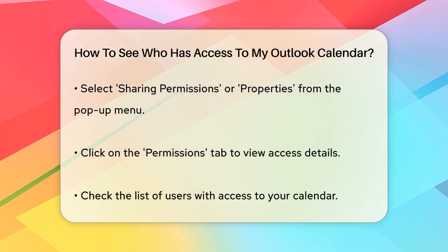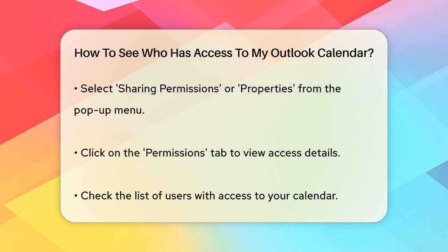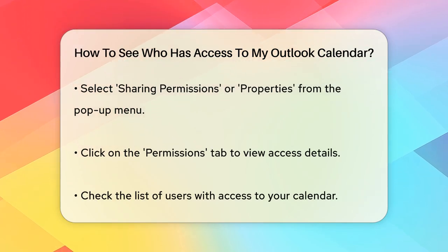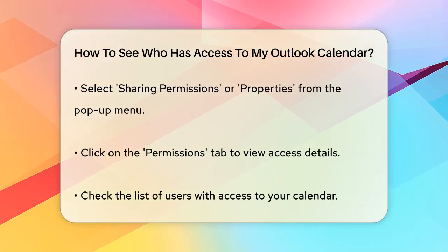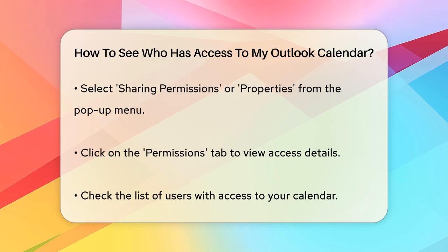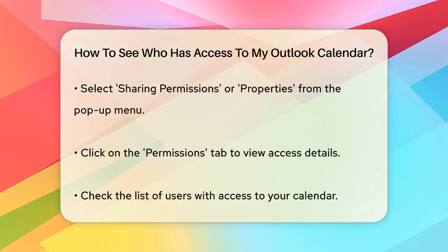Here, you'll see a list of users who currently have access to your calendar. In this list, you can see the names of the people who have been granted permissions, along with the specific permission levels they have.